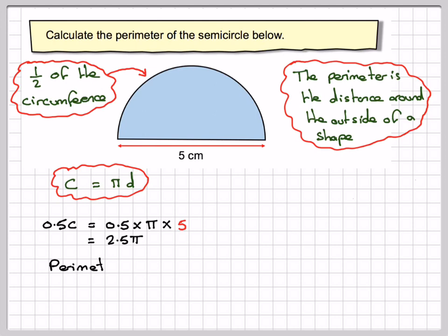Now we shouldn't really need to calculate it at this point, but the perimeter will be this distance here which is 5, plus half of the circumference which we just worked out to be 2.5 pi.